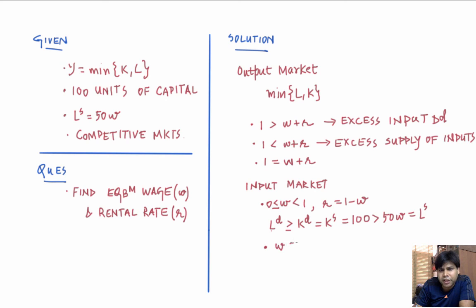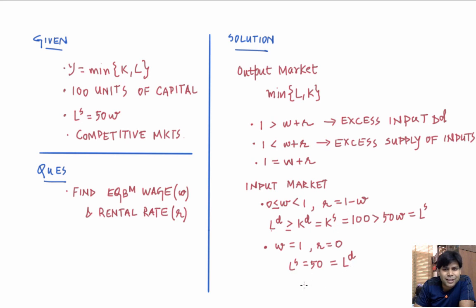The last possibility is w equals one and r equals zero. When w equals one, labor supply is 50 units. The firm can demand any amount of labor, so we set labor demand equal to 50 to clear the labor market. Since r equals zero, capital demand can be any number greater than or equal to 50, so it can be 100 — which equals the capital supply of 100. Therefore, when wage equals one and rental rate equals zero, we have equilibrium. Thank you.